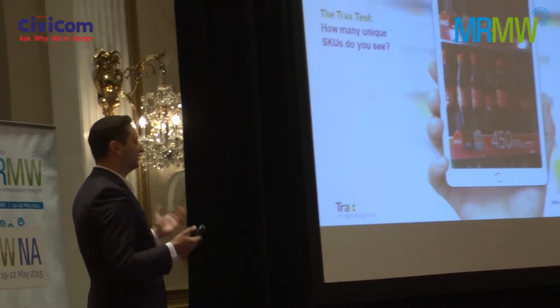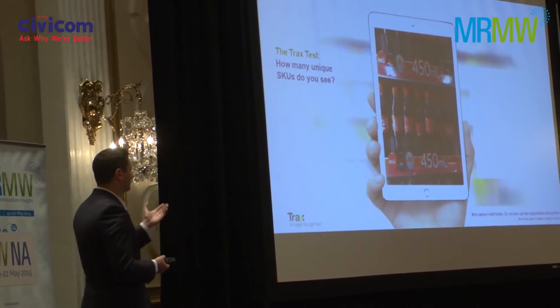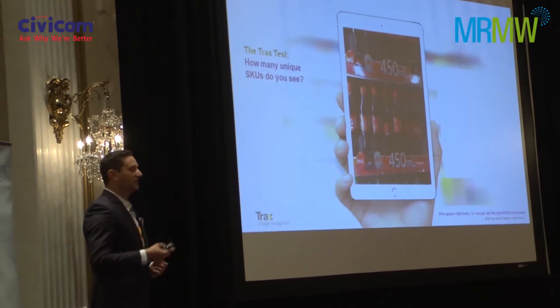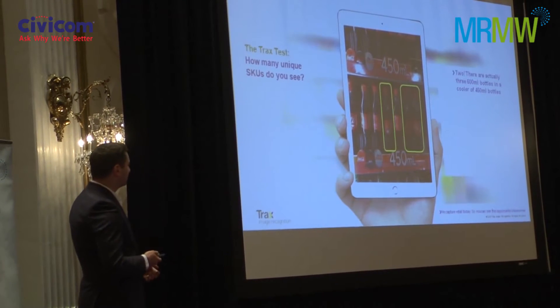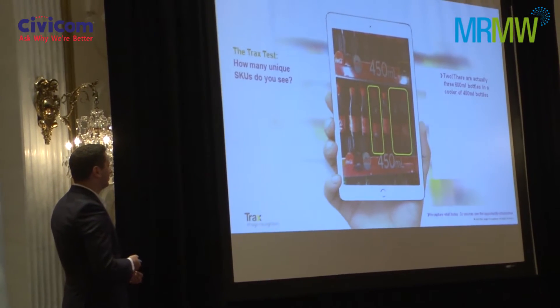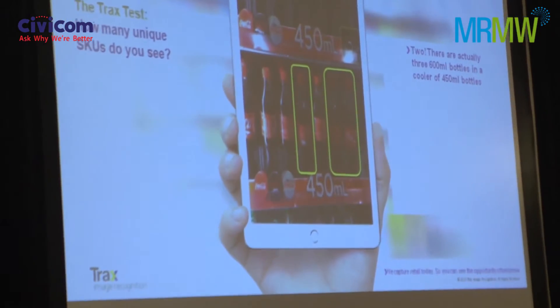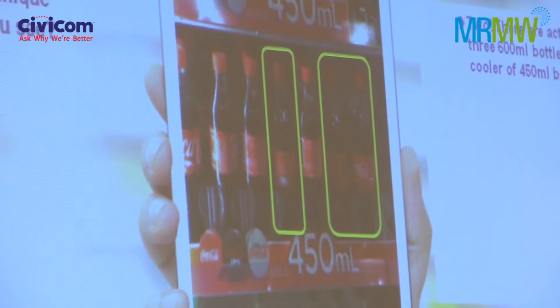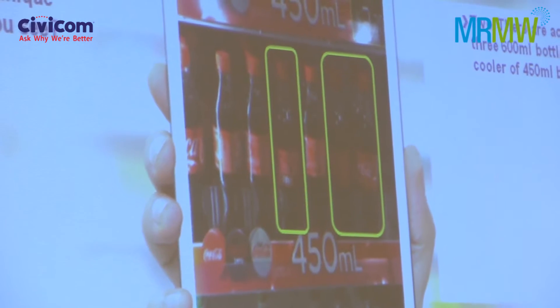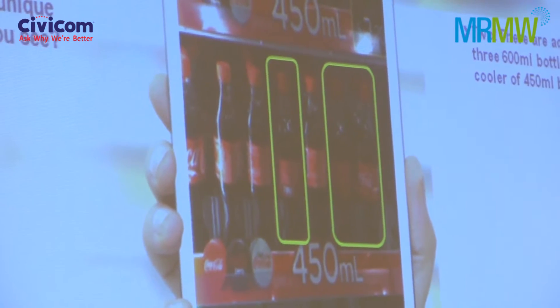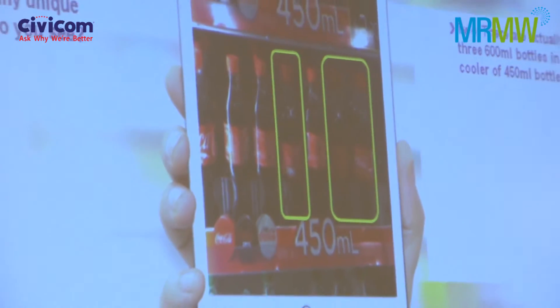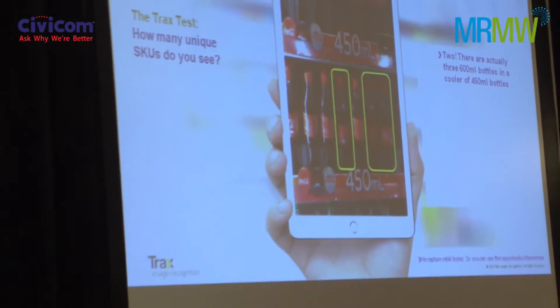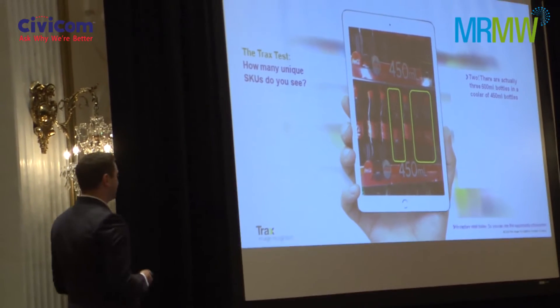This is an image taken from a Coca-Cola cooler. You can see Coca-Cola product in it, with a 450 ml decal on it. But if you look closely, three of the products on the shelf are actually 600 ml products — there's no visible branding that would indicate that. This was picked up by looking at the geometry of the products. The reason this is significant is that the market where this photograph was taken does not have a 600 ml product, so these are actually parallel imports brought into this marketplace.